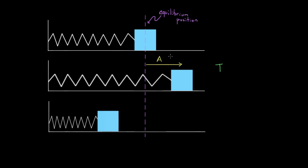For the amplitude, it's kind of obvious — it's the person or thing pulling the mass back. Whoever or whatever is displacing this mass is determining the amplitude. So if you pull the mass back far, you've given this oscillator a large amplitude, and if you only pull it back a little bit, you've given it a small amplitude.